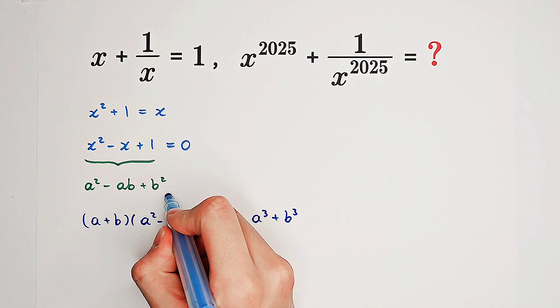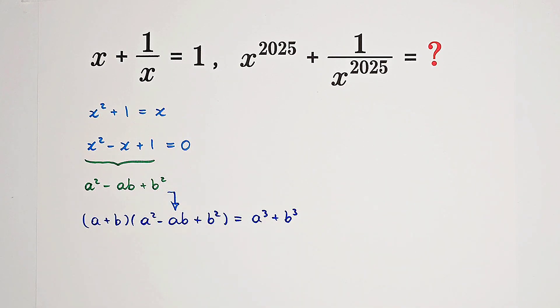So that means our equation is a part of the factorization. It's just a factor of a cubed plus b cubed.